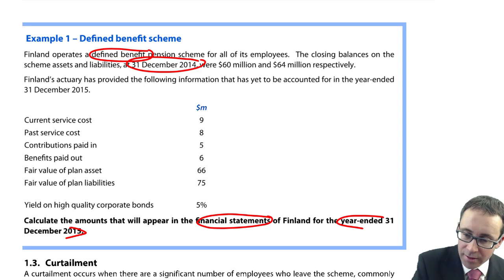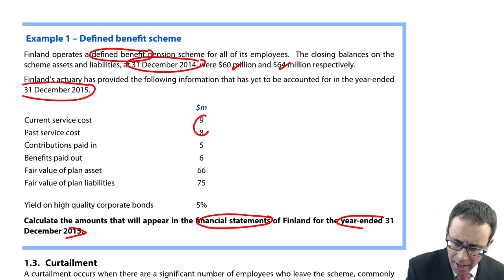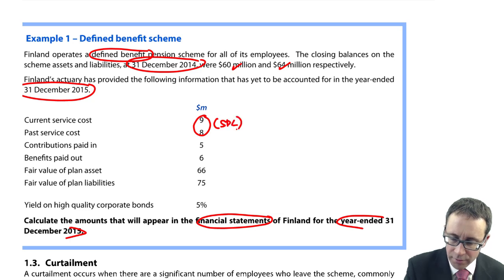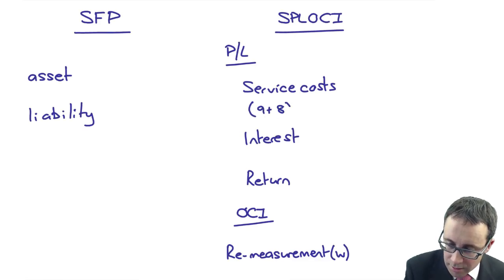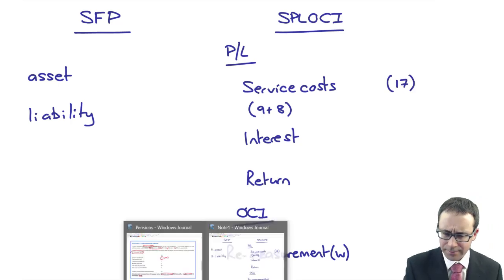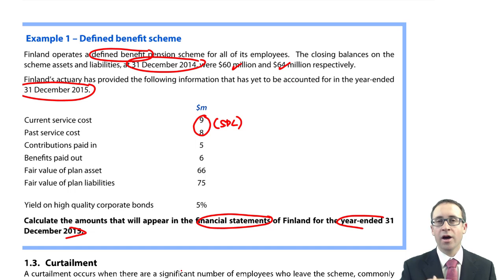It then tells us everything that happened in December 2015. I've got my service costs — is that nine and eight? So both of those are going to go to the statement of profit or loss, giving nine plus eight as 17. I've got the contributions paid in and the benefits paid out, which I'll deal with in my adjustments for assets and liabilities.